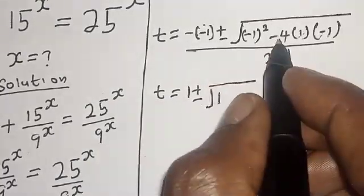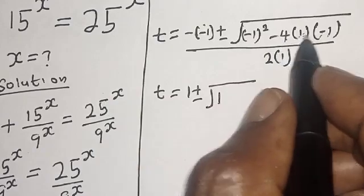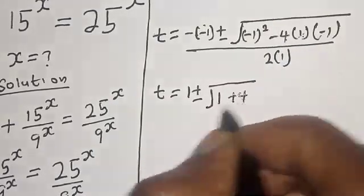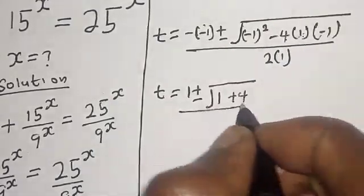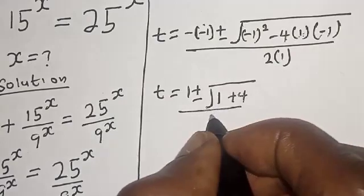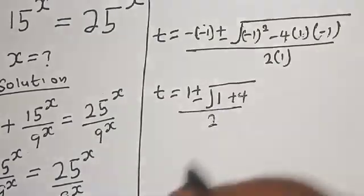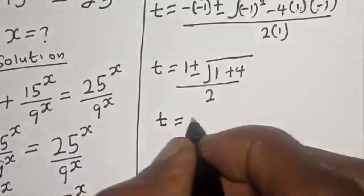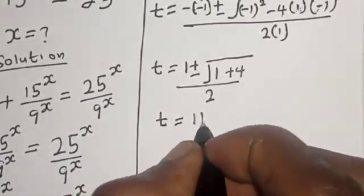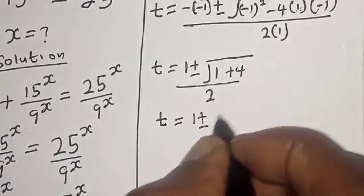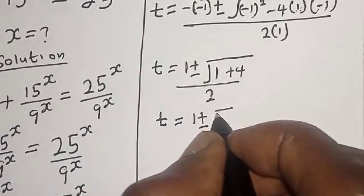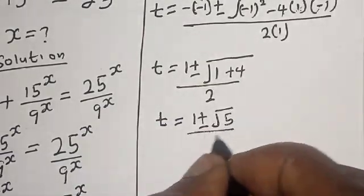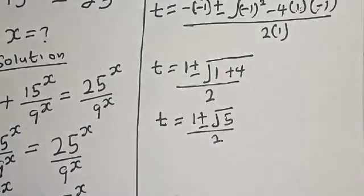This simplifies to t equals 1 plus or minus the square root of 5, all over 2.